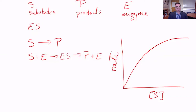Some enzymes catalyze reactions involving one specific substrate; others catalyze reactions involving groups of substrates that tend to have similar structural features — they look the same and undergo the same types of reactions. Enzyme specificity — the ability of the enzyme to select the right substrate — is due to the precise interactions of the enzyme with the substrate, which result from the three-dimensional structure of the enzyme. This gives us the common phrase in biology and biochemistry: structure determines function. The structure of the enzyme and how it interacts with the substrate really determines what that enzyme can do.